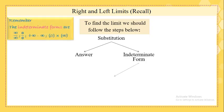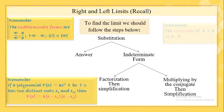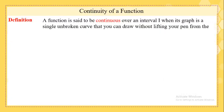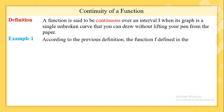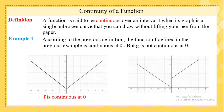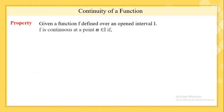This is a summary from the last video about left and right limits. Now we define a function to be continuous over an interval I when its graph is a single unbroken curve that you can draw without lifting your pen from the paper. As an example below, we see that F is continuous at x equals zero, but G is discontinuous at zero.